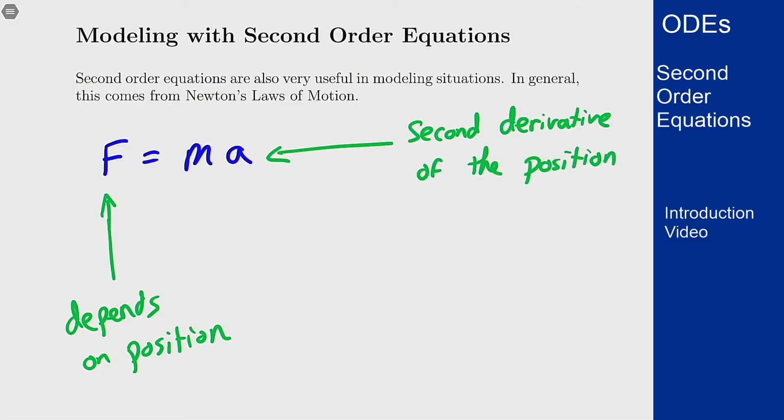A situation like this gives me something, this big F, that is going to depend on the position of this object, equaling something related to the second derivative of that position. So right now I have a second order differential equation that's staring at me right in terms of this law.